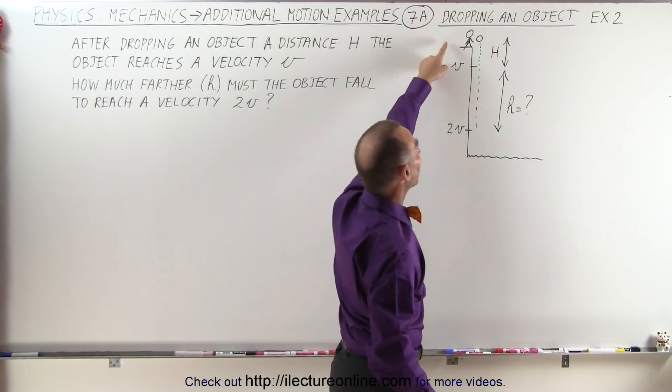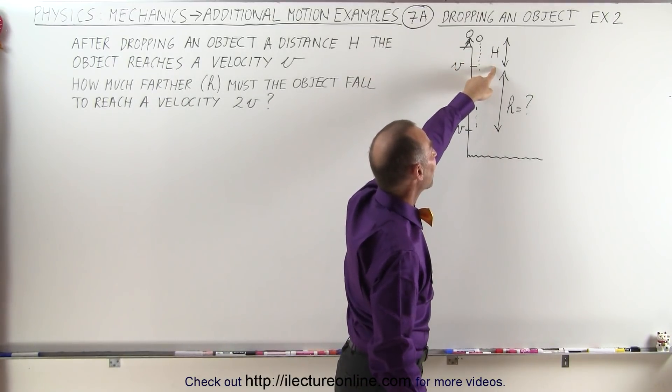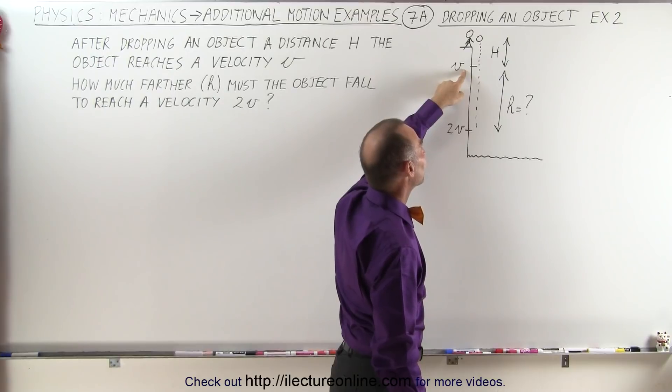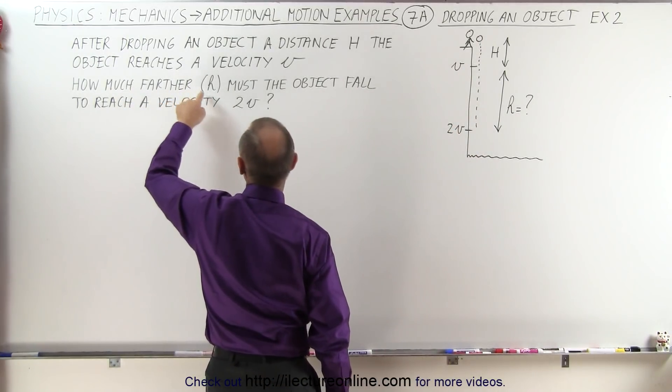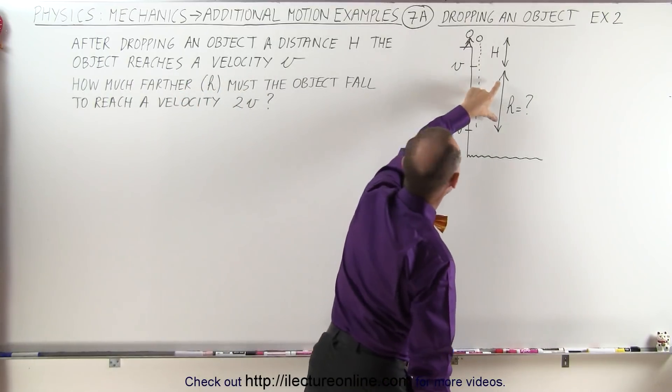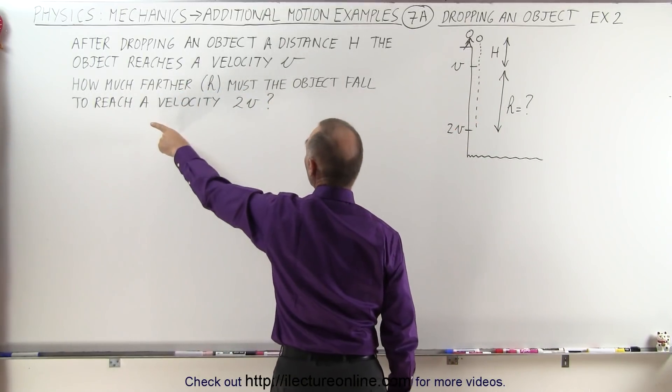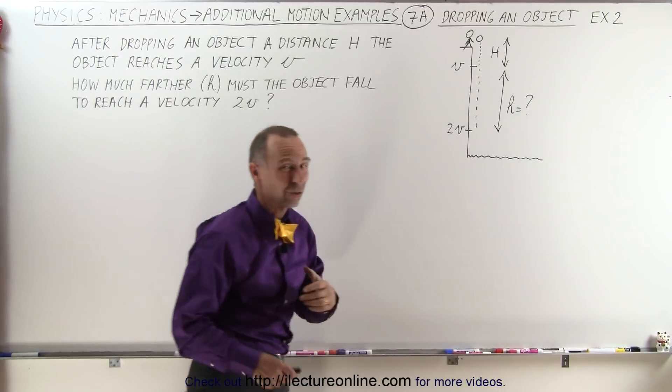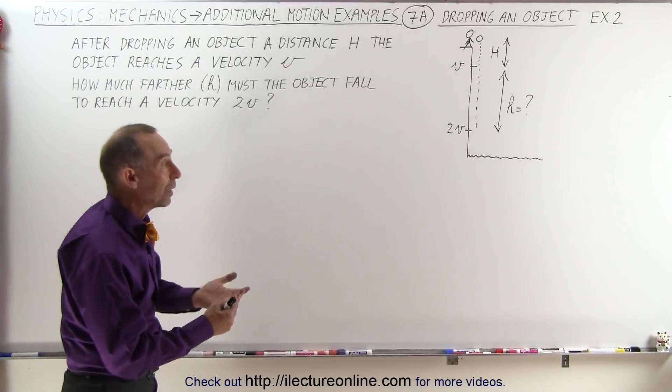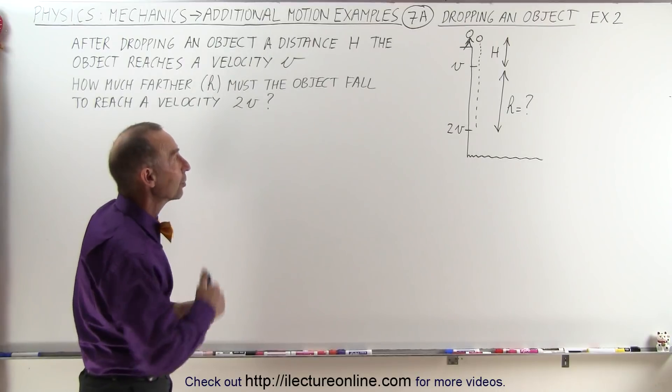We drop a ball and after it's fallen a certain distance h it has reached the velocity v. Then the question is how much farther, let's call it small h here, does the object have to drop in order to reach the velocity twice as fast? Of course it's going to be a greater distance but how much greater? What will small h be compared to large h?